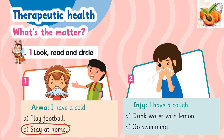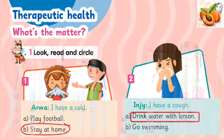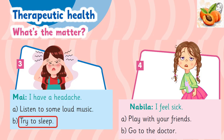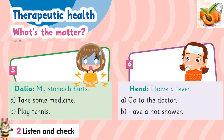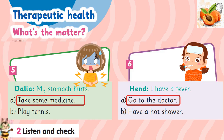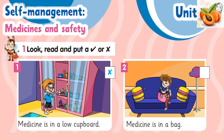Exercise 2. Listen and check. 1. Be healthy. I have a cold. Run with me. Stay at home. Are you ready? 2. I have a cough. Drink water with lemon. 3. I have a headache. Try to sleep. I feel sick. Go to the doctor. 5. My stomach hurts. Take some medicine.